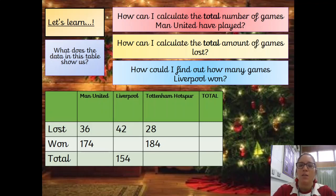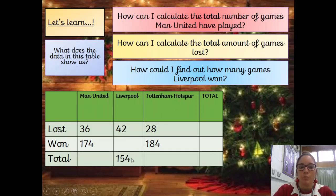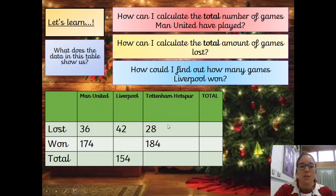How can I calculate the total amount of games lost? You need to add those numbers together to find your total in the lost row. And finally, how could I find out how many games Liverpool won? We know the total is 154 — the total amount of games Liverpool have played. We know they've lost 42. So subtract 42 from 154, which will tell you how many games Liverpool won.